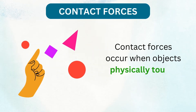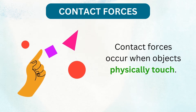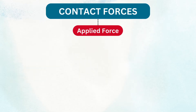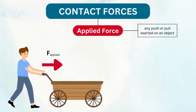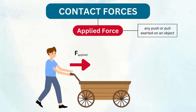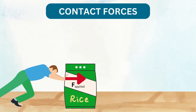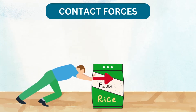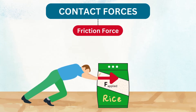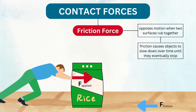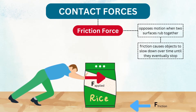First, let's talk about contact forces — forces that only occur when two objects physically touch each other. These forces are everywhere in our daily lives. The most common one is applied force, any push or pull we exert on an object. Think about pushing a wooden pushcart — the harder you push, the faster it moves. But have you ever tried pushing a sack of rice across a rock floor and felt it resist? That's friction at work — the force that opposes motion when two surfaces rub together. When an object experiences friction, it slows down over time until it comes to a complete stop.